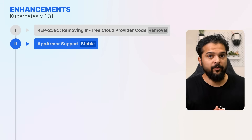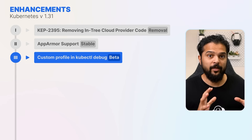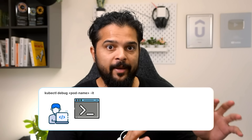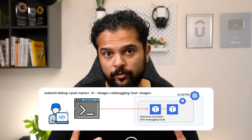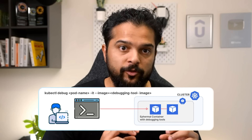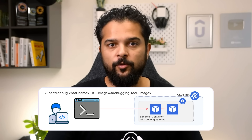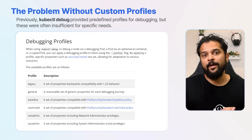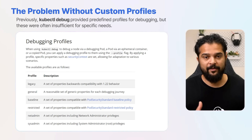Next, we'll look at another very useful feature graduating to beta: the new custom profile section for the kubectl debug command. As you may know, Kubernetes provides a kubectl debug command to help developers and administrators troubleshoot running applications. It allows you to create a debugging session in a running pod, which is especially useful for issues in containerized applications. Previously, kubectl debug provided predefined profiles for debugging, but these were often insufficient for specific needs — users might need to add environment variables, replicate volume mounts, or adjust security contexts.